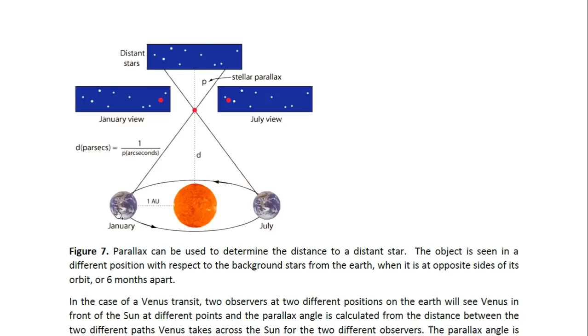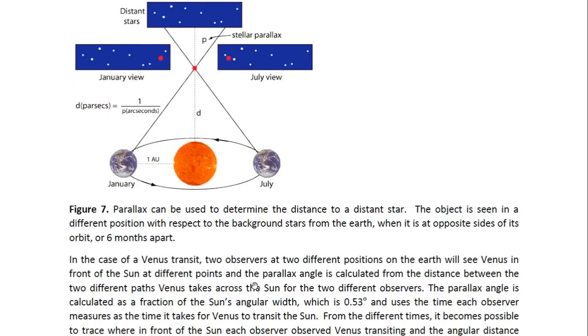So if we observe a distant star in January and July, so when earth is at approximately opposite sides of the solar system, so the observations are done as far apart as possible, then the star is observed in different positions with respect to the distant stars. So in January, we would see it there, as shown here. That would be the January view. And from the July position, we would see it there. So it would be there. Now, from the angular distance between these two positions, the distance to the star can be determined, which is D here.